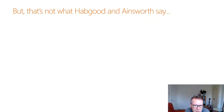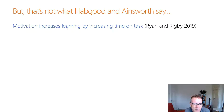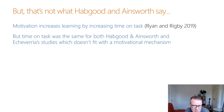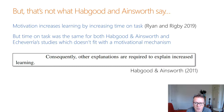But that's not actually what Habgood and Ainsworth say if you read the paper more closely. The way motivation is seen to increase learning is by increasing time on task — if the game increases your motivation you're more likely to spend more time on it and therefore more likely to learn. However, time on task was exactly the same in both Habgood and Ainsworth's and Echeveria's studies across all conditions, which doesn't fit with a motivational mechanism. So Habgood and Ainsworth actually say in the paper that other explanations are required.